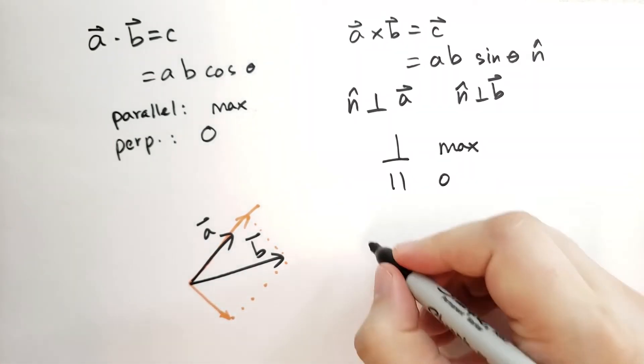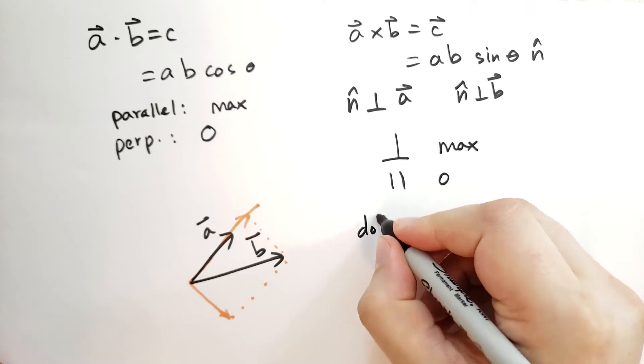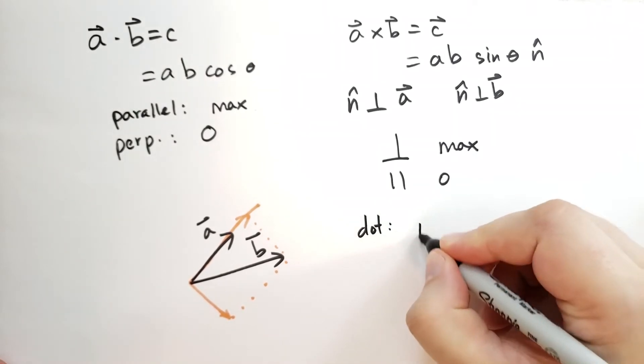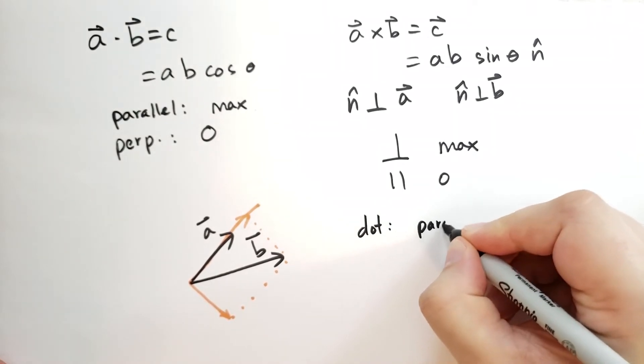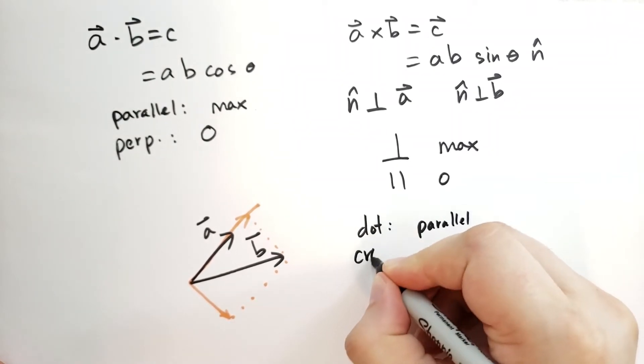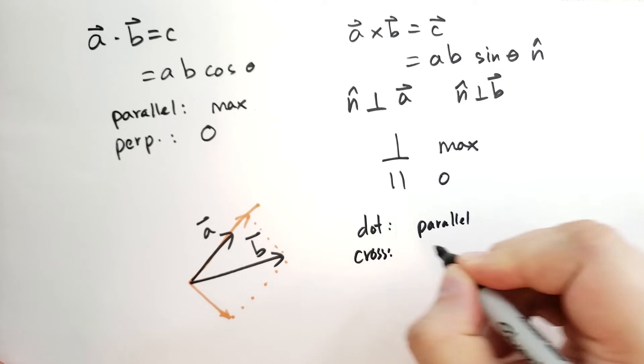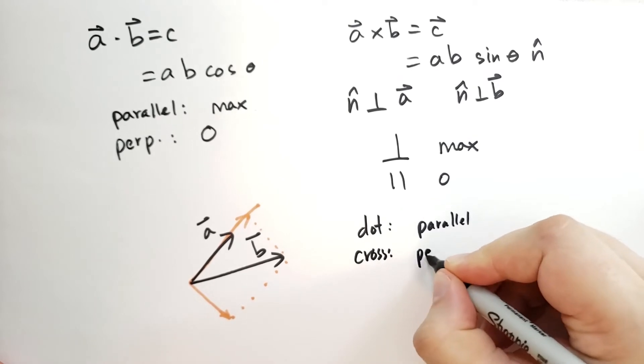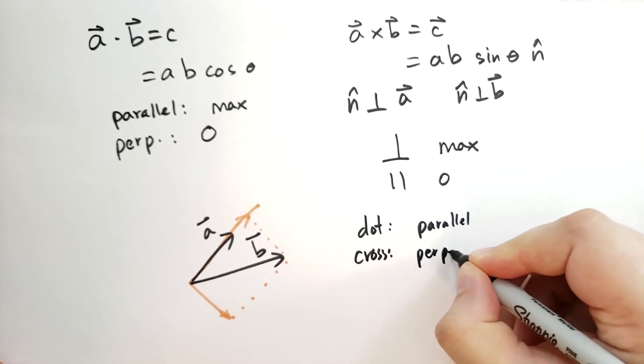In this sense, the dot product tells you how parallel the two vectors are, and the cross product tells you how perpendicular they are.